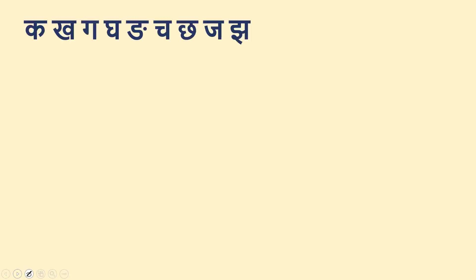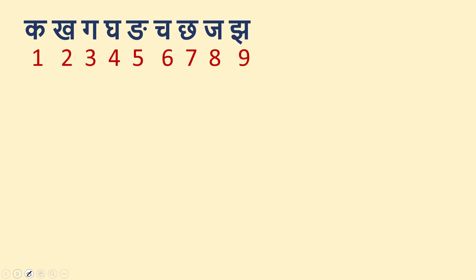It says: Kaadi Nava — from Ka, take 9 alphabets, numbered 1 through 9. That is: Ka, Kha, Ga, Gha, Nya, Cha, Chha, Ja, Jha — those 9 letters. That's all. Kaadi Nava.